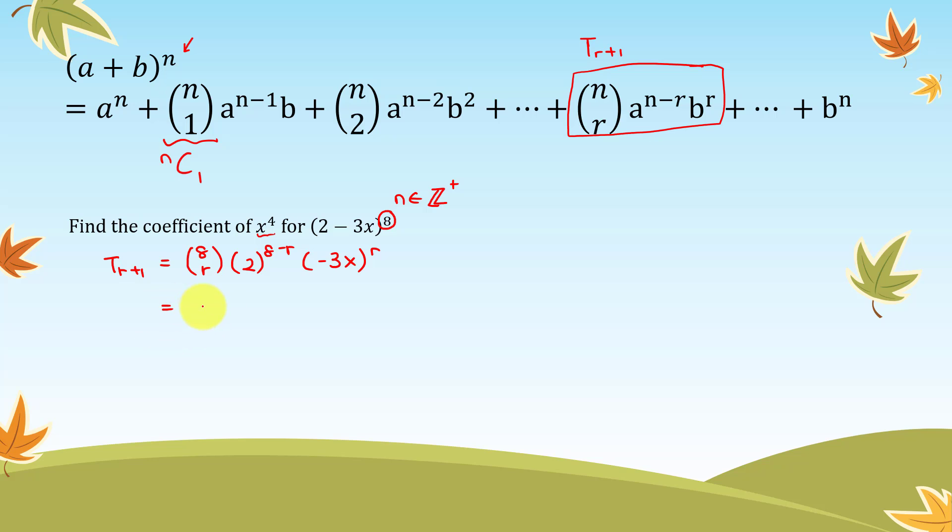And then simplify a little bit: 8Cr times 2 to the power of 8 minus r. Since we have a multiplication inside this bracket, let us separate the numbers and the unknown. We are going to have negative 3 to the power of r, x to the power of r. Let us check, do we have any unknown in front here? I didn't see anything with x. So that means this is the only term that has some x.